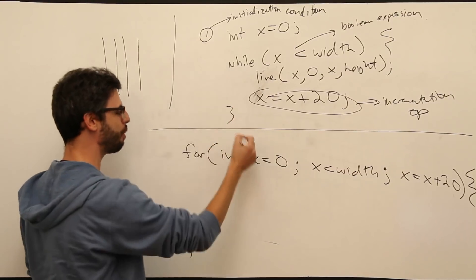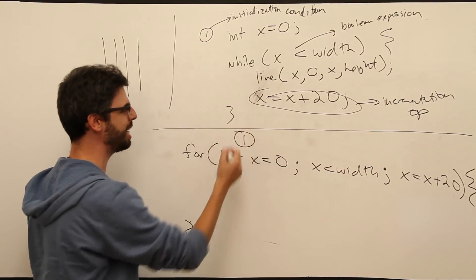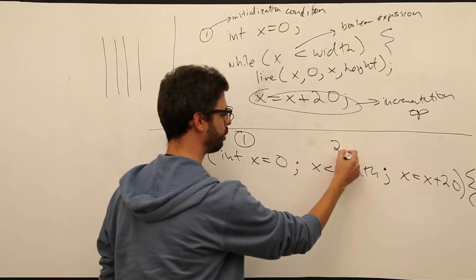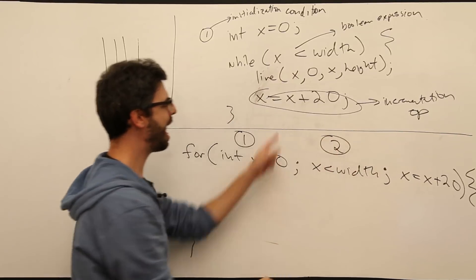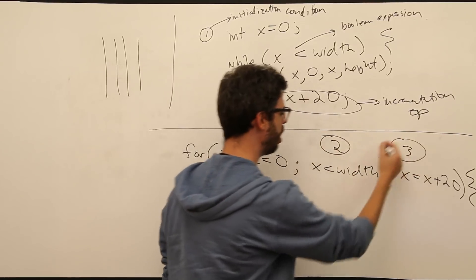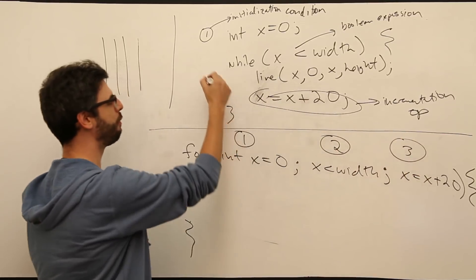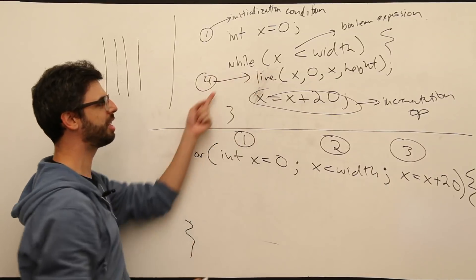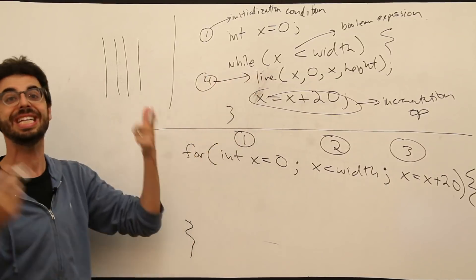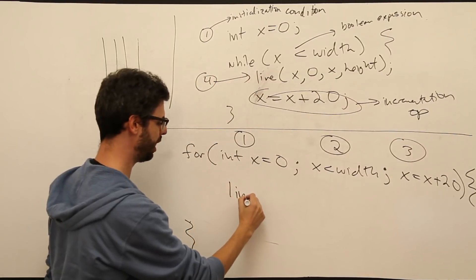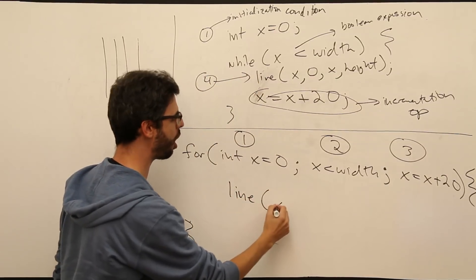Look at this. We have element number one right here — the initialization. Element number two right here — the Boolean expression. Element number three right here — the incrementation. And element number four is the stuff that you do inside the loop, which for us is draw a line.